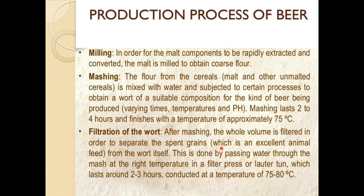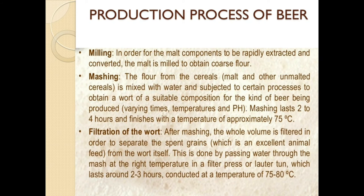After mashing, filtration of the wort takes place. The whole volume is filtered to separate the spent grains — which are an excellent animal feed — from the wort. This is done by passing water through the mash at the right temperature in a filter press or lauter tun, lasting around 2 to 3 hours at 75 to 80 degrees Celsius.